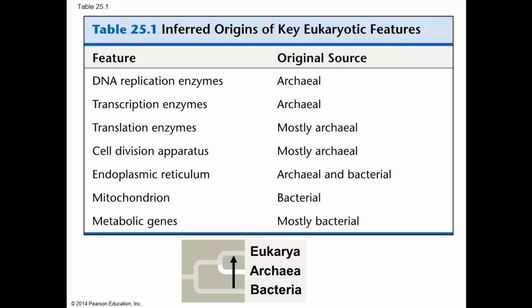The endoplasmic reticulum, that network of membranes, appears to have arisen from archaeocells in some species and bacterial organisms in others. The mitochondria appear to be similar to bacteria, and many metabolic genes appear to have bacterial origins. This simple phylogeny showing the three domains demonstrates how bacteria entered eukaryotic cells. So even though they didn't share a very recent common ancestor, eukaryotes could have had features of bacterial cells by taking up the bacterial cells themselves.